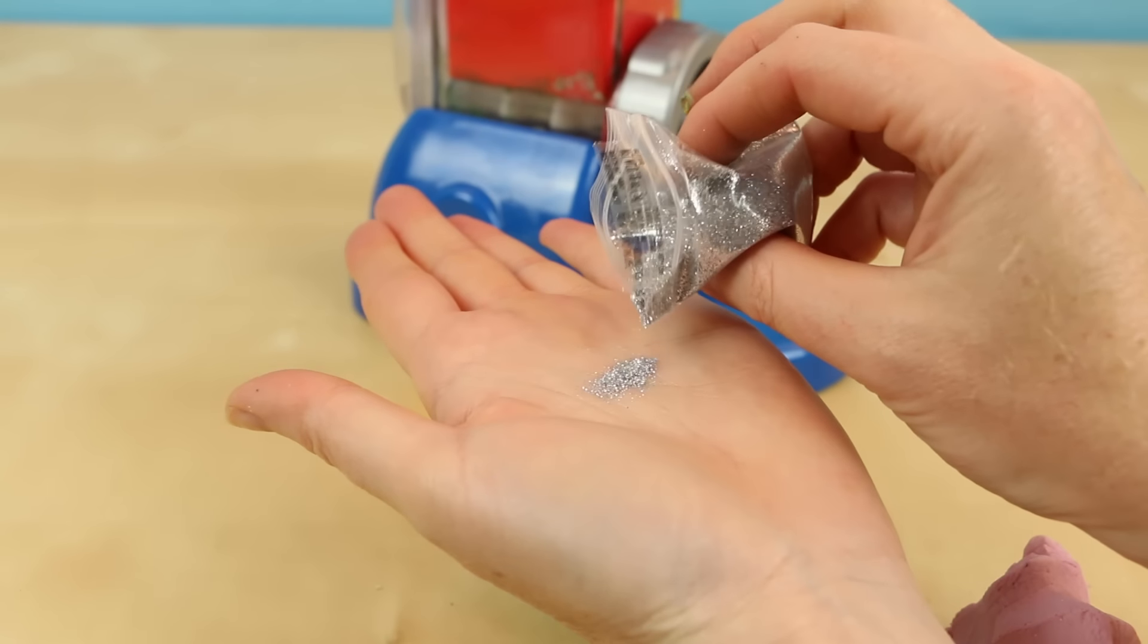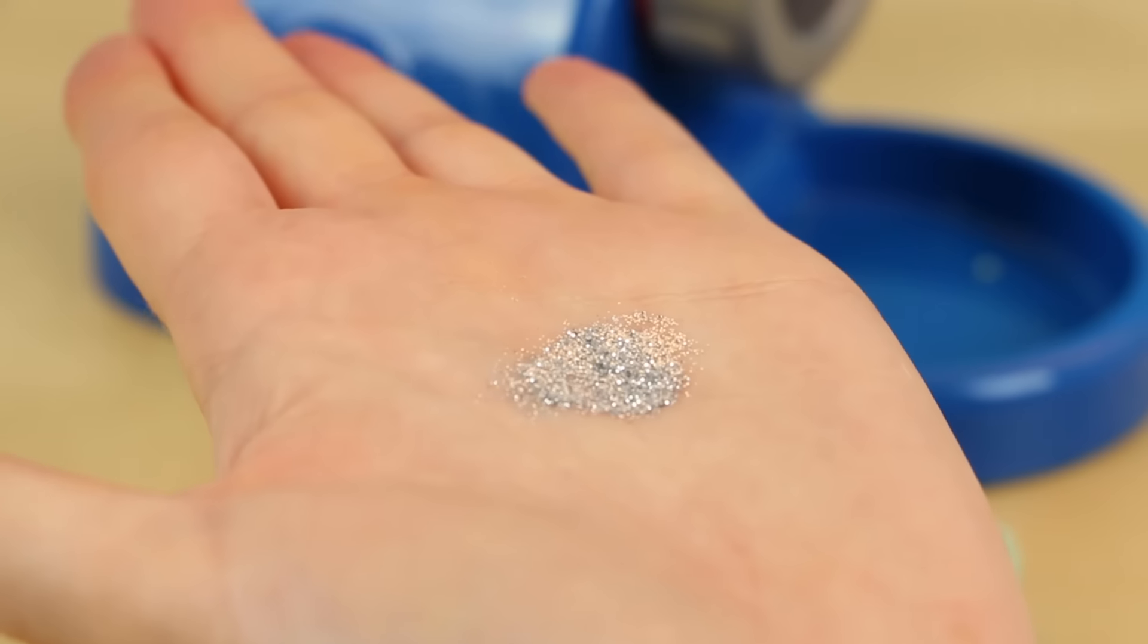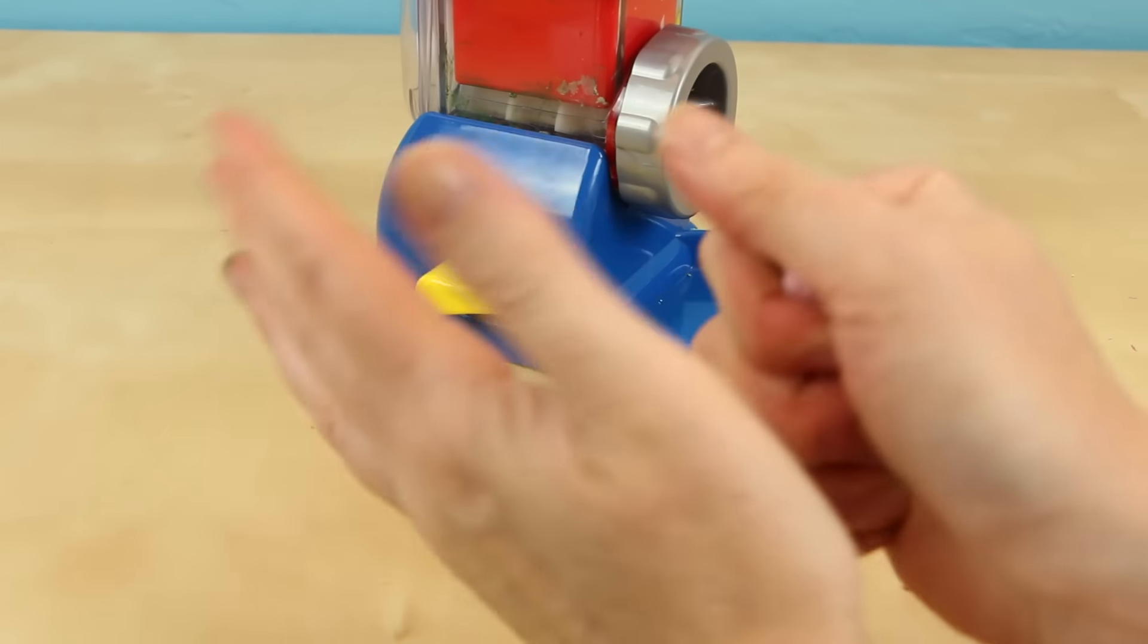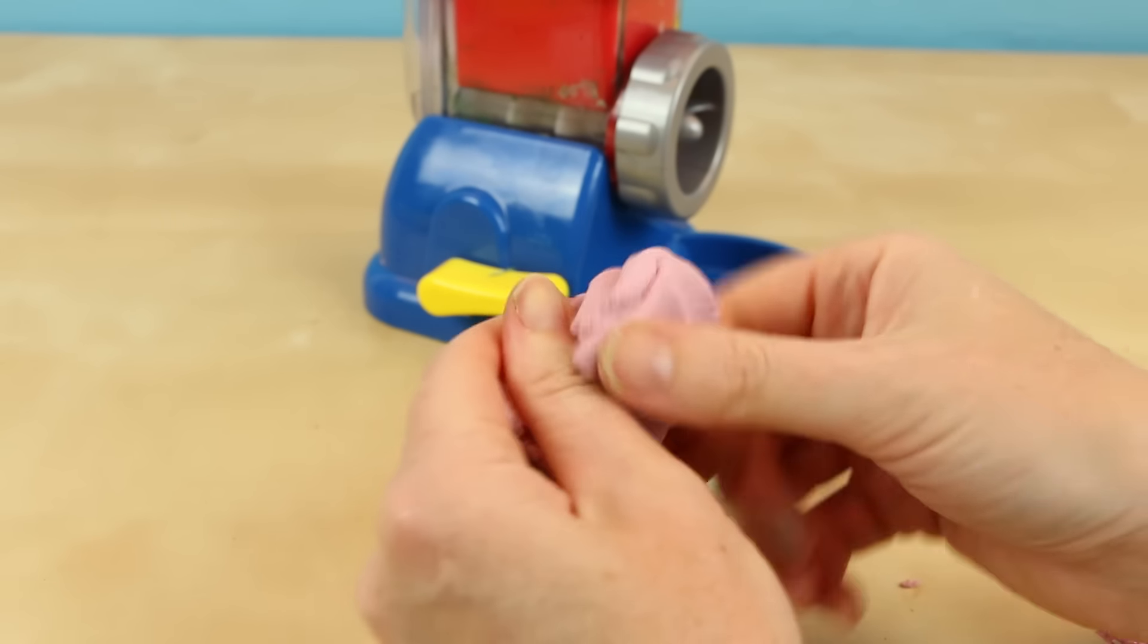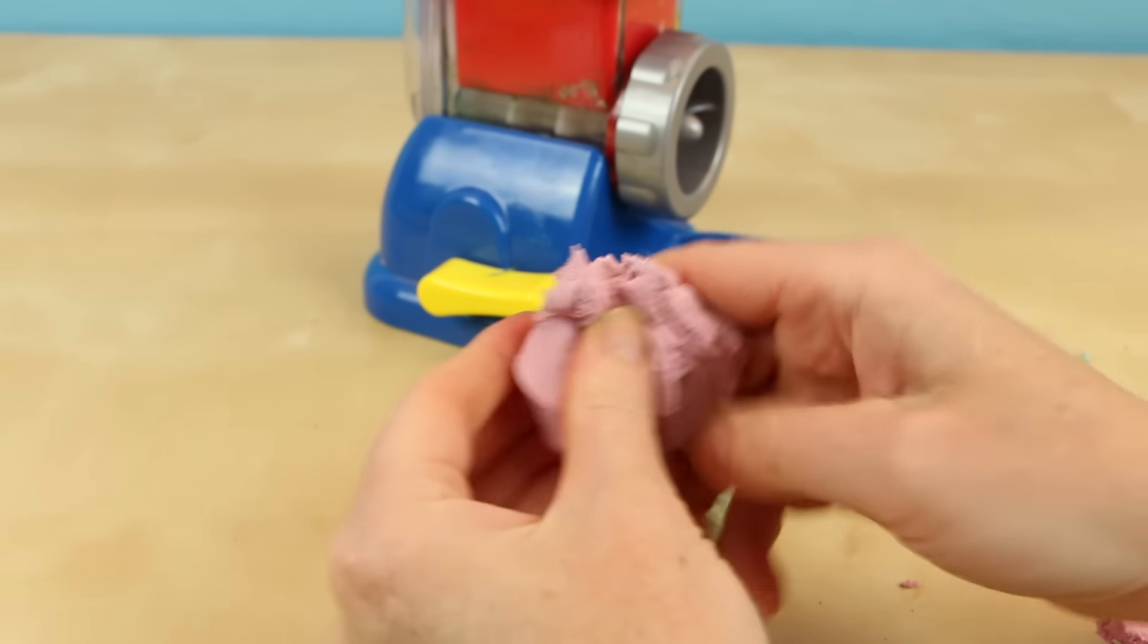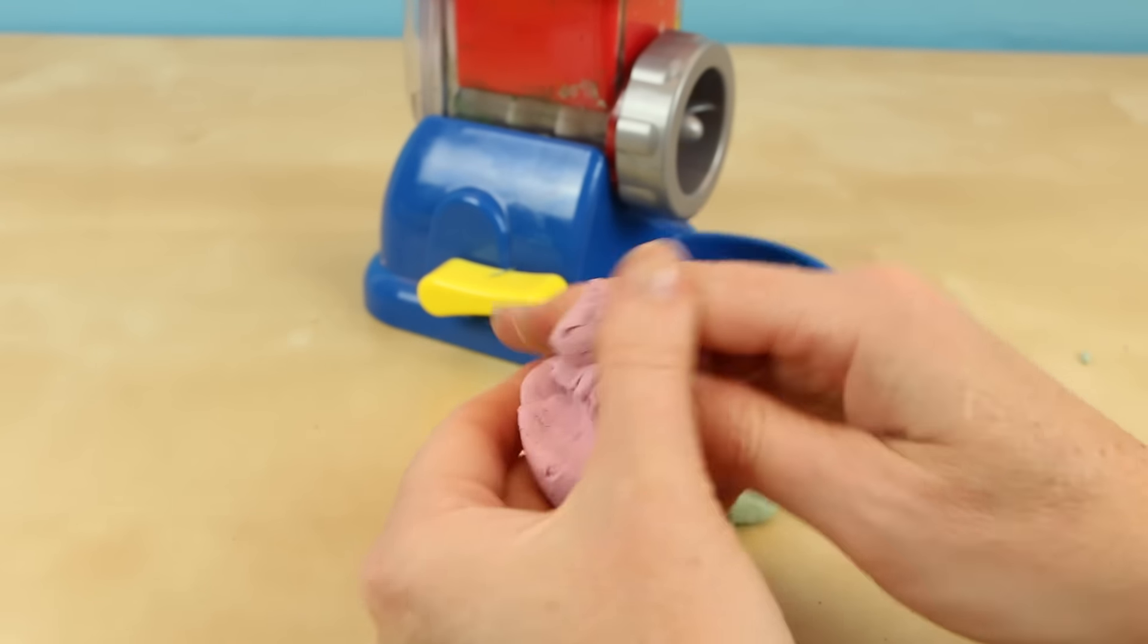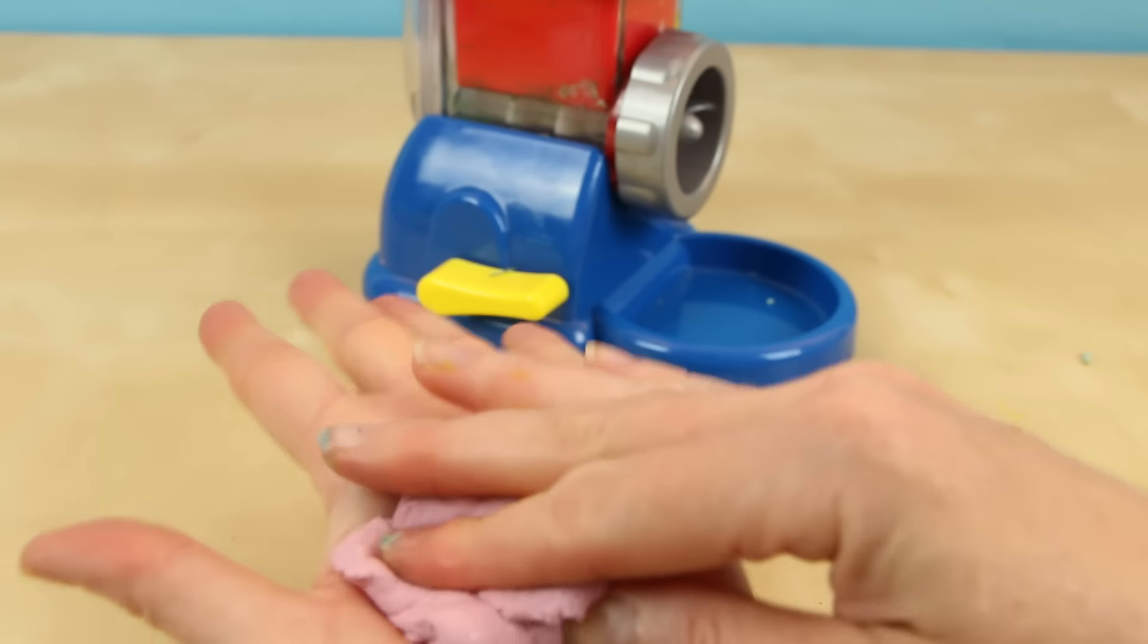Also to the parents out there, the glitter that comes inside this set is very, very fine. Most of the glitter is able to stick to the dough but you are gonna have a few pieces of glitter that don't and that'll be stuck to your hand. So if you're looking to not have glitter everywhere I would definitely get your kids to wash their hands immediately after playing with the glitter dough.